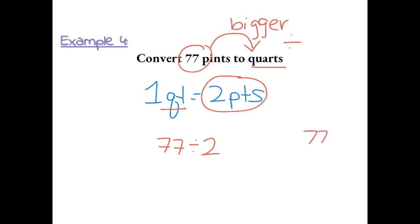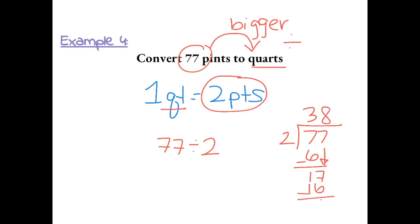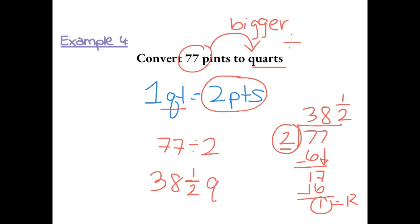So we have 77 divided by 2. 2 goes into 7 three times, which gives us 6. Bring down the 7 — 2 goes into 17 eight times, which equals 16. So we have 38 remainder 1, giving us 38 and 1 half. The numerator comes from the remainder and the denominator from our divisor. So 77 pints is equal to 38 and one-half quarts.